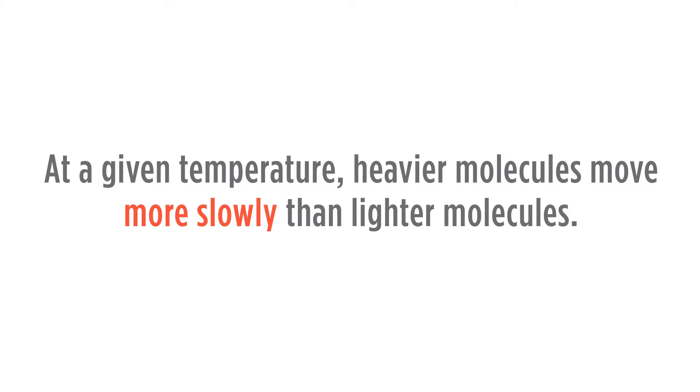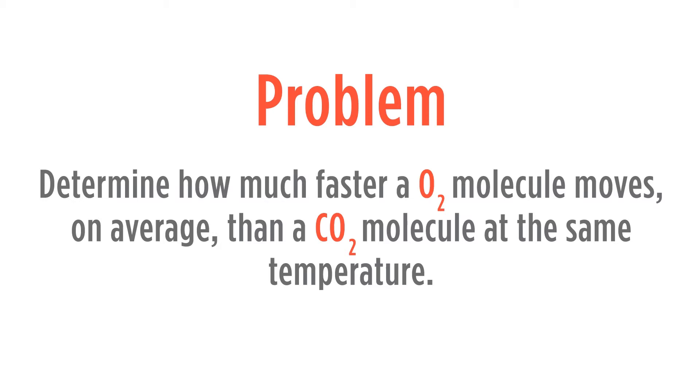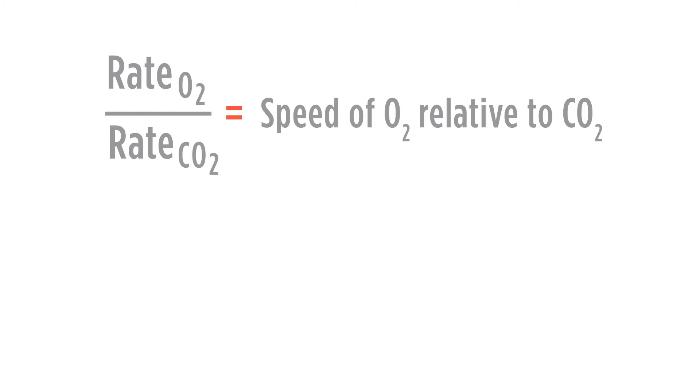Let's go ahead and try a problem using Graham's Law. Determine how much faster an oxygen molecule moves, on average, than a carbon dioxide molecule at the same temperature. Now for this, we're just looking at how much faster the oxygen is compared to the carbon dioxide. So therefore, the rate of the oxygen over the rate of the CO2 would be the speed of oxygen relative to that of CO2.